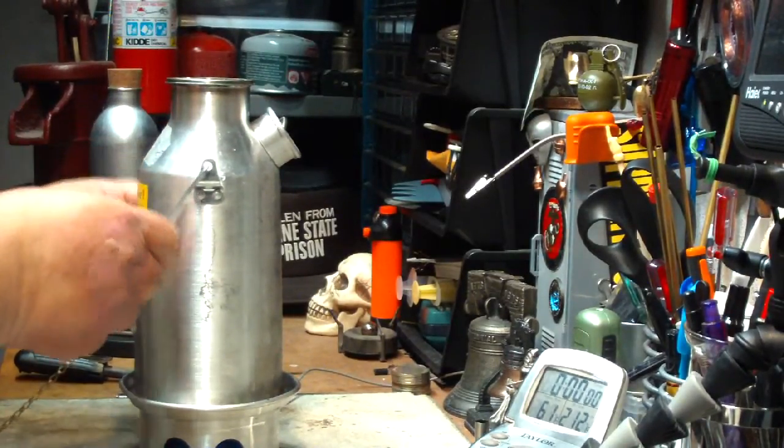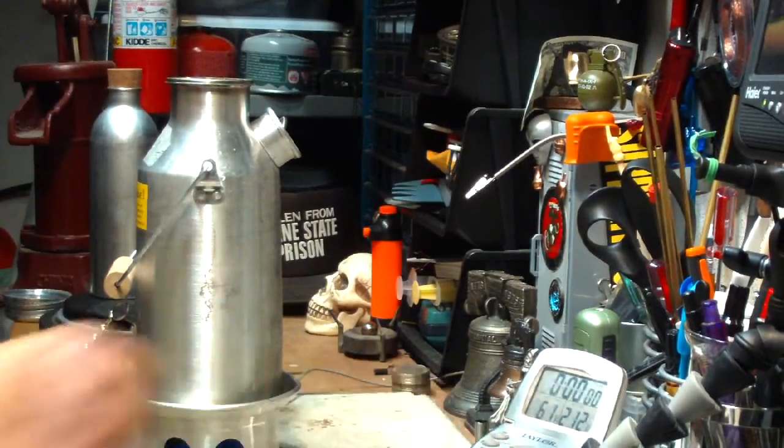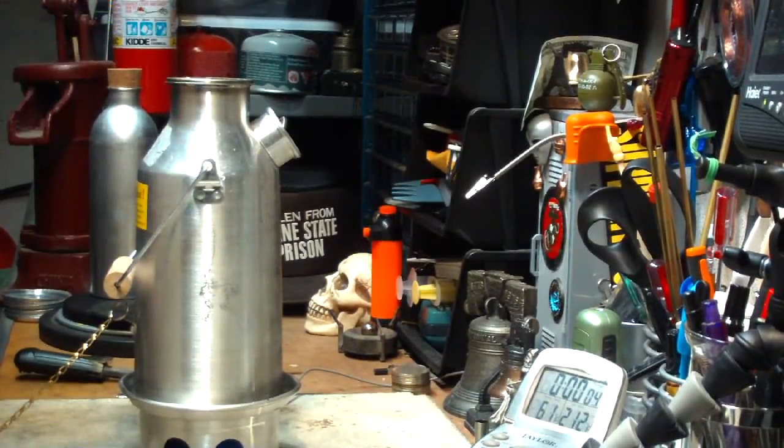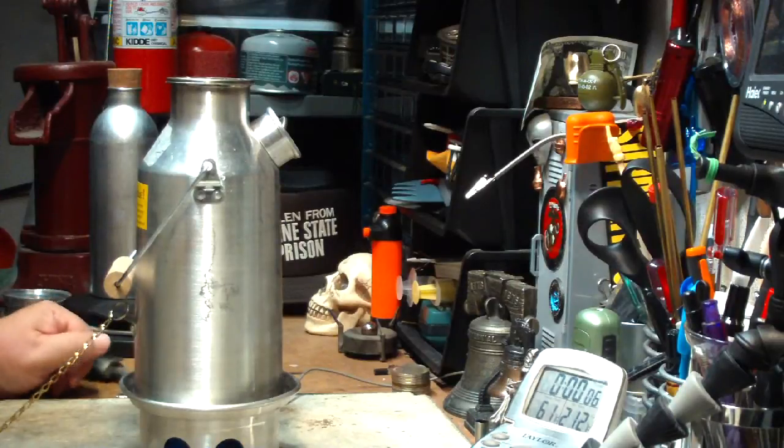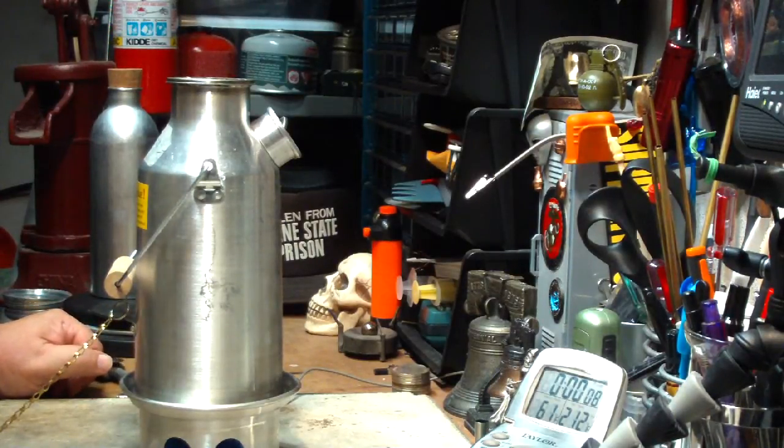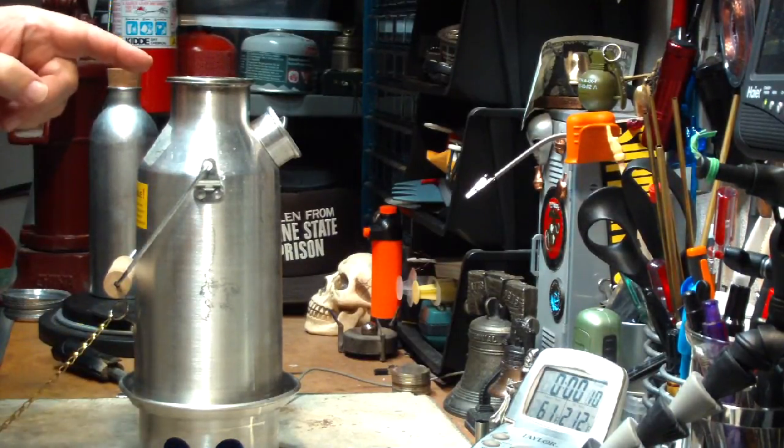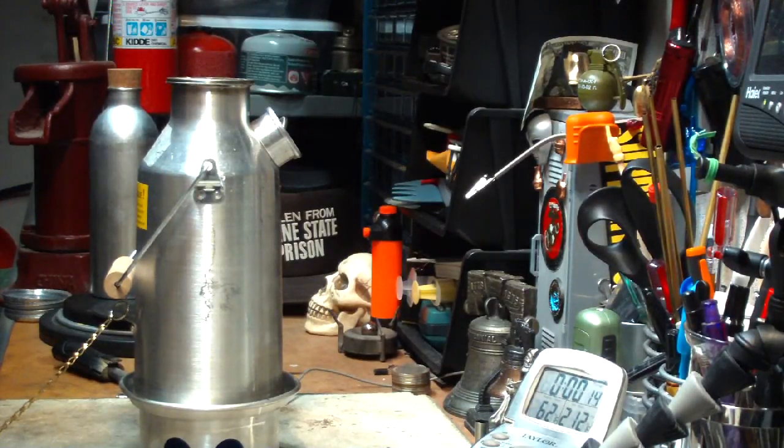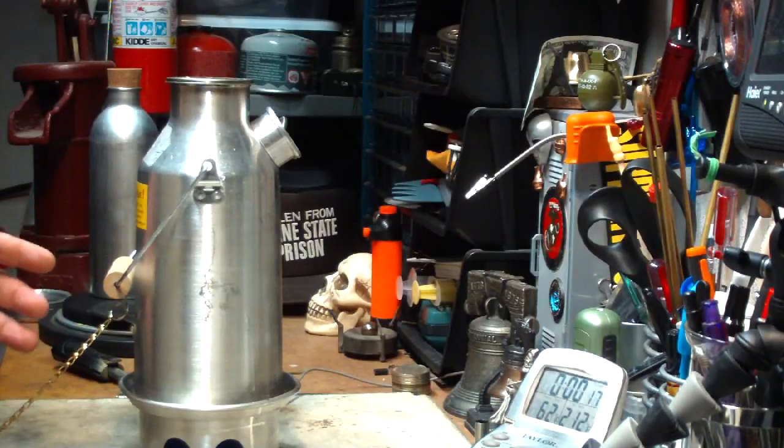Now you saw in the last video how without this lid on the top, flames just shot up about a foot out of the top of this and consumed the alcohol almost instantly. But with this little disc in place, it restricts the flow and heats, lets the alcohol burn longer.